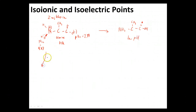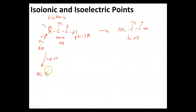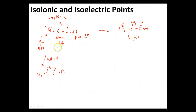At high pH — really basic solutions — we're going to be tearing off that proton, and that's going to be a 50-50 mix once we get to a pH of 9.9. When that happens, we end up having NH2, our carbon, CH3, and COO⁻, which will be negative. That's our anion form. So we see our high pH case and our low pH case.